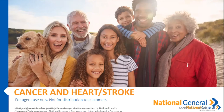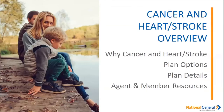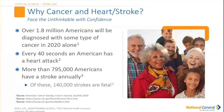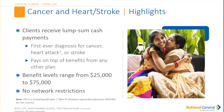Now let's look at our cancer, heart and stroke policies. We're going to go over why cancer, heart and stroke, the plan options, the plan details, and agent and member resources. Over 1.8 million Americans will be diagnosed with some type of cancer in 2020. Every 40 seconds, an American has a heart attack. More than 790,000 Americans have a stroke annually, and of those, 140,000 strokes are fatal.